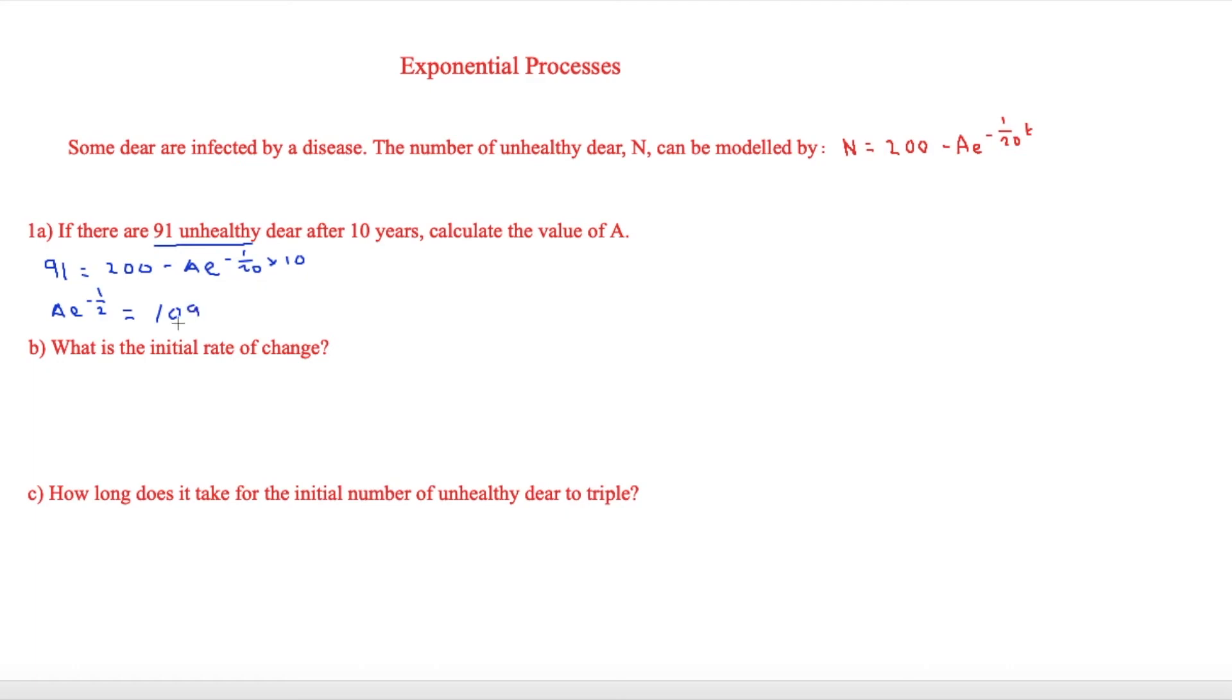Therefore A is equal to 109 divided by e to the minus 1 half, which equals 179.7, but we want to round it as you can't have a decimal number of deer. So we'll make it 180.